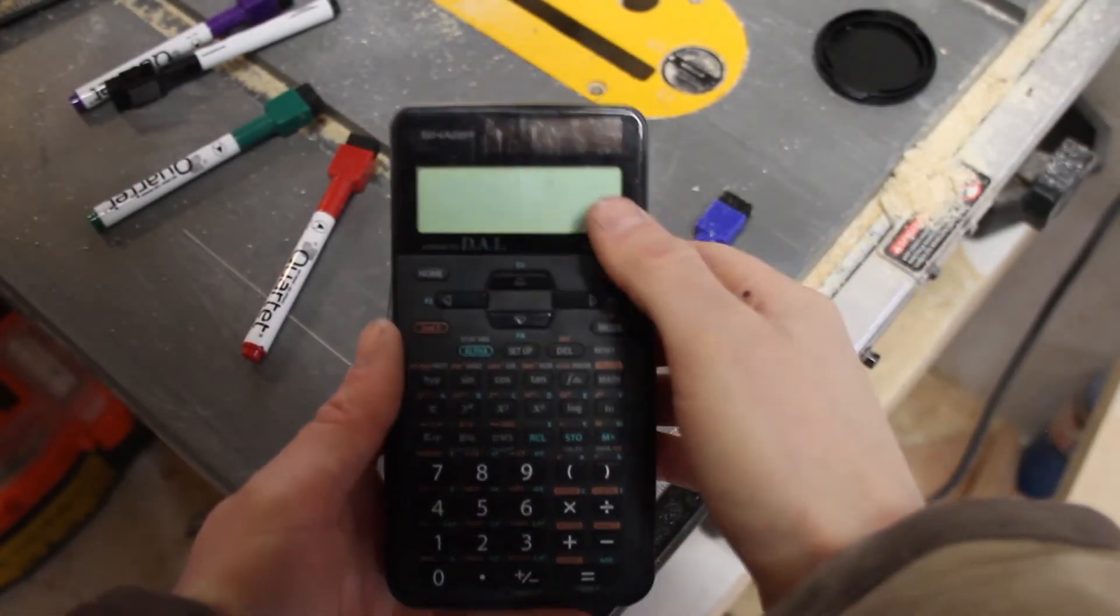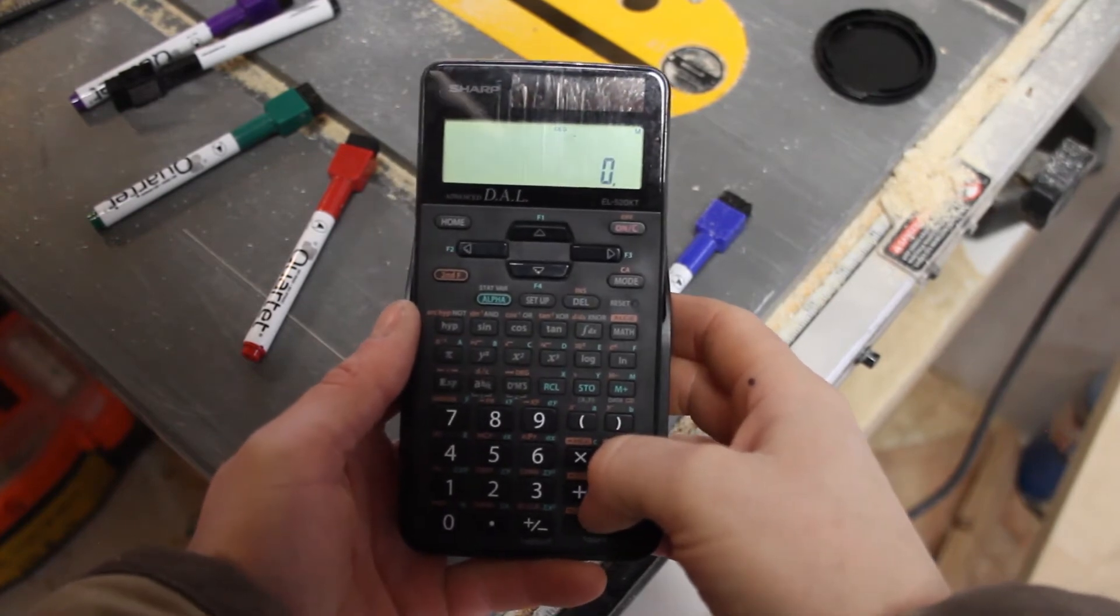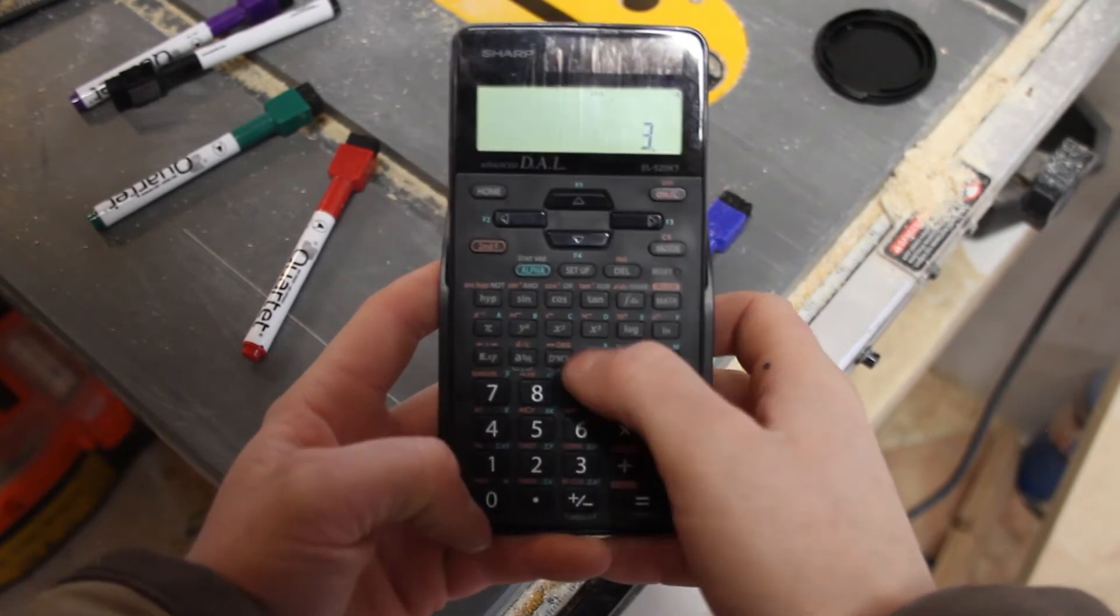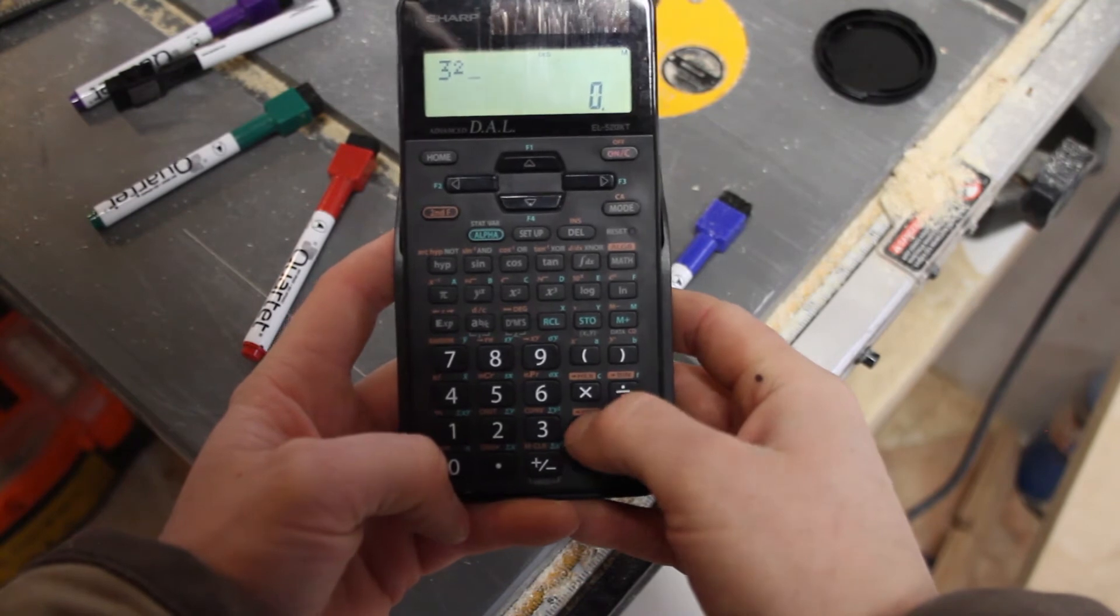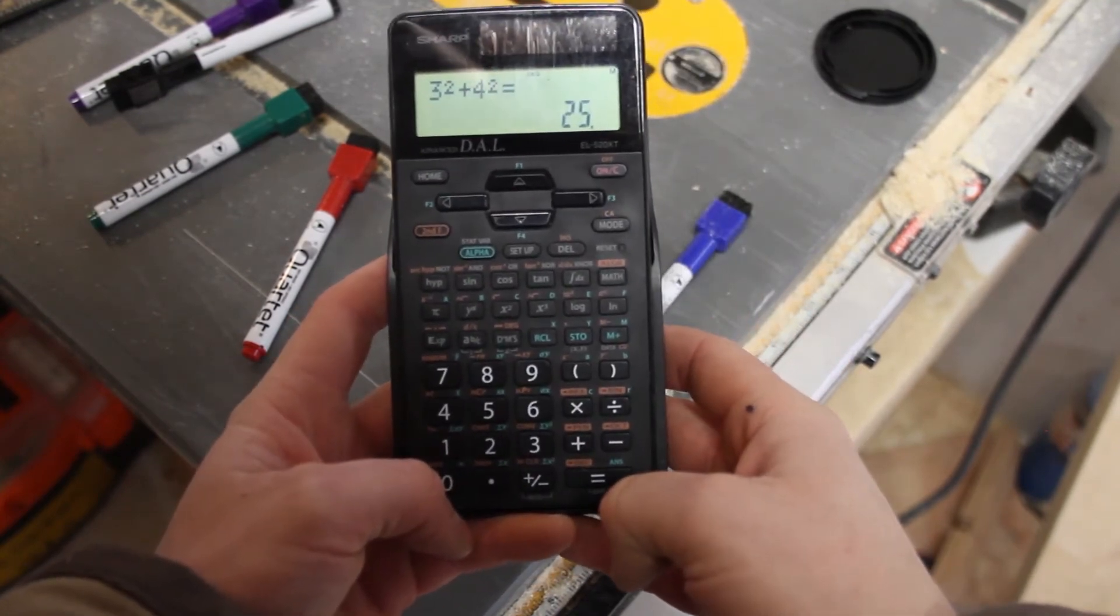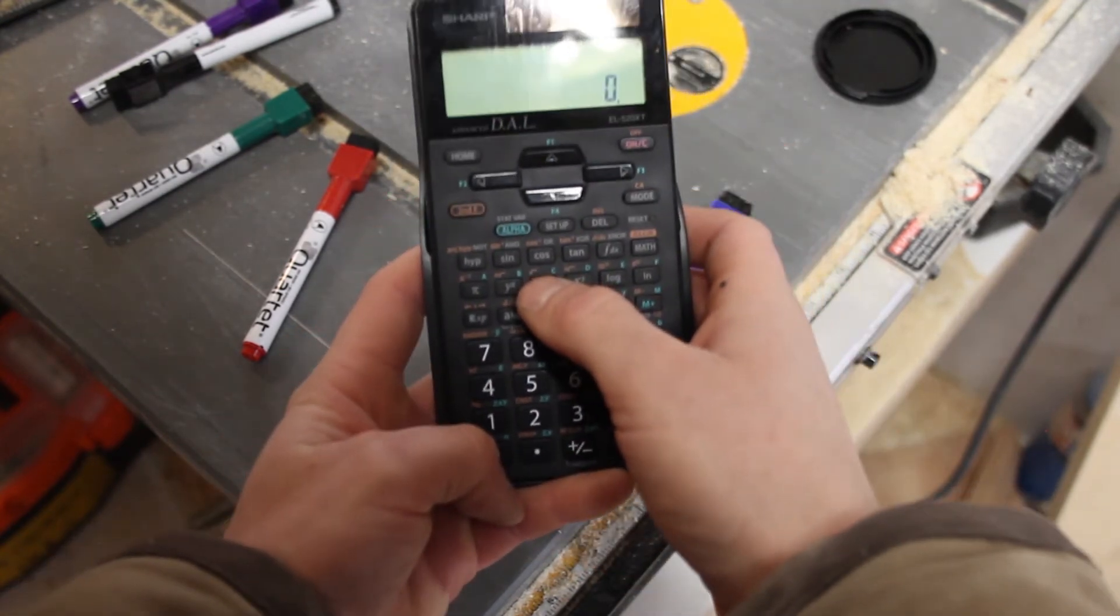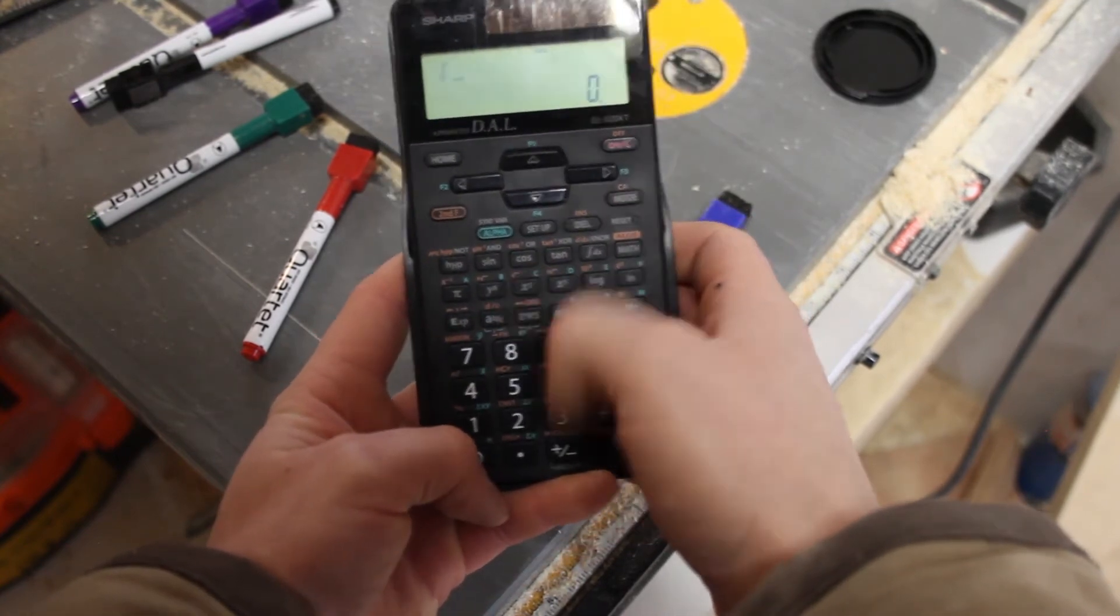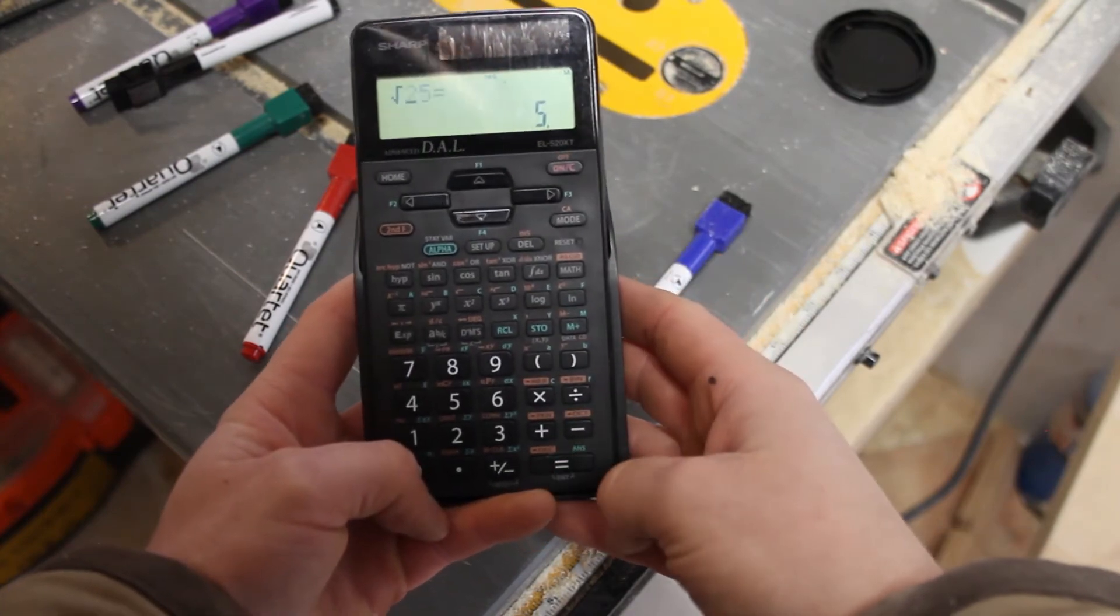Okay, now we'll try doing this with the scientific calculator. So we take three to the power of two, plus four to the power of two, equals 25. So the square root function is one of the second functions above the x to the power of two, so you go second function, square root of 25, equals 5.